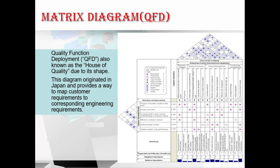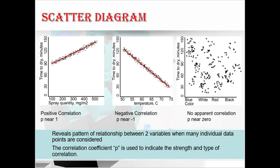Along with the matrix diagram, we have the QFD version — Quality Function Deployment, also known as the House of Quality due to its shape. This diagram originated in Japan and provides a way to map customer requirements to corresponding engineering requirements. Moving to scatter diagrams — a scatter diagram is a graph that shows the relationship between two variables. It can demonstrate a relationship between any element of a process, environment, or activity on one axis and a quality defect on the other axis.